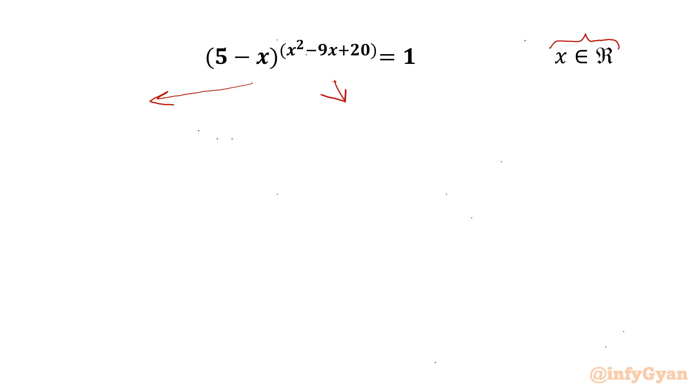First case: if our base equals 1, then 1 raised to the power of anything will give us RHS 1. Second case: if power is 0, then also we will get RHS 1, because anything with power 0 equals 1. But at the same time base cannot be 0.